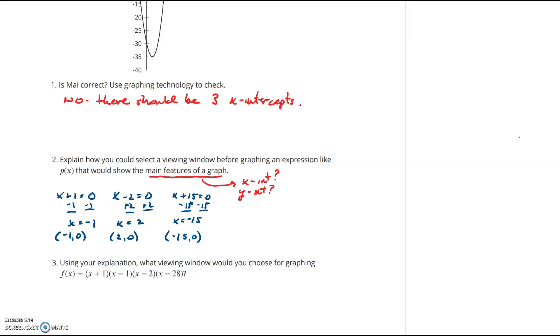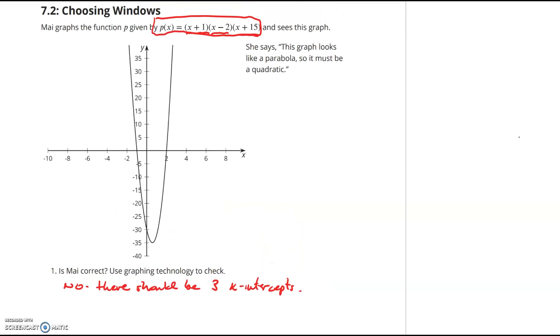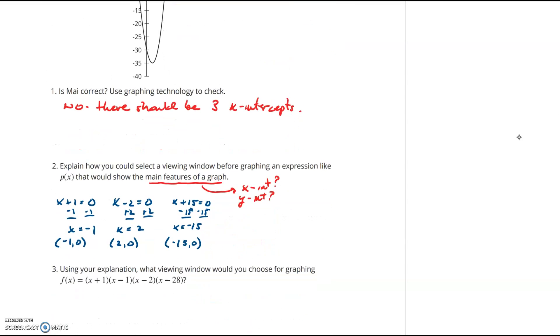Now, in addition to that, remember, we can find the y-intercept by taking all three constant values, positive 1, negative 2, and 15, and multiplying those. To find the y-intercept, let's multiply each one of those: positive 1, negative 2, and positive 15. And when we multiply that, we get a value of negative 30, so then I know that my y-intercept should be the point (0, -30).